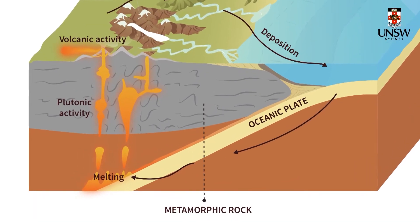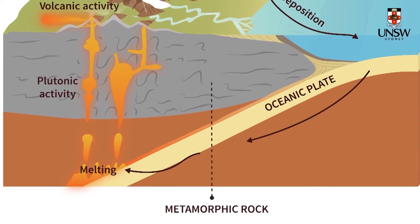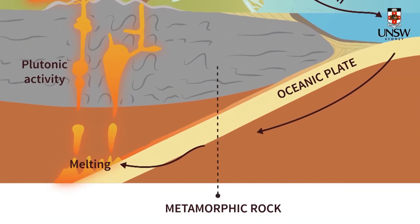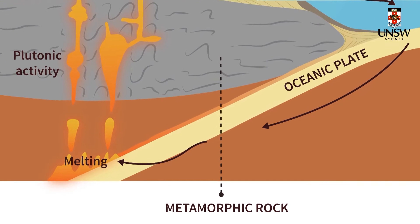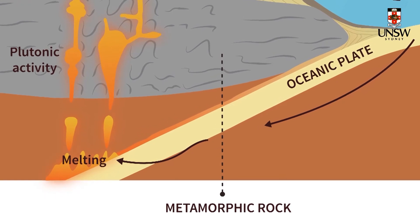Metamorphic rocks, as their name implies, have been physically and/or chemically altered. This has happened by heat alone or heat and pressure over extended periods of time.